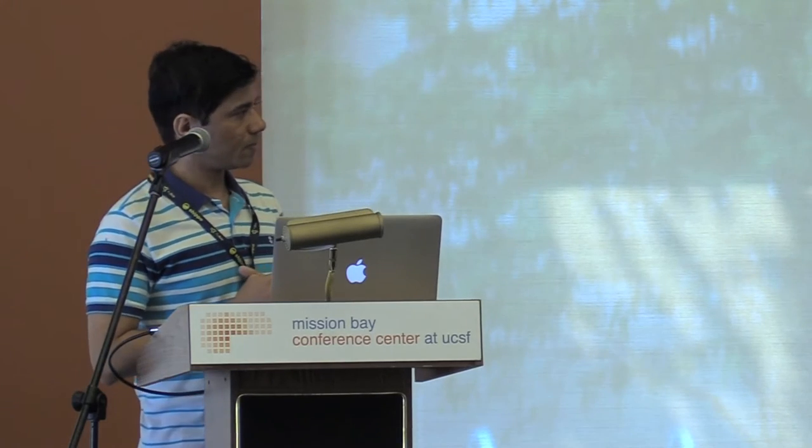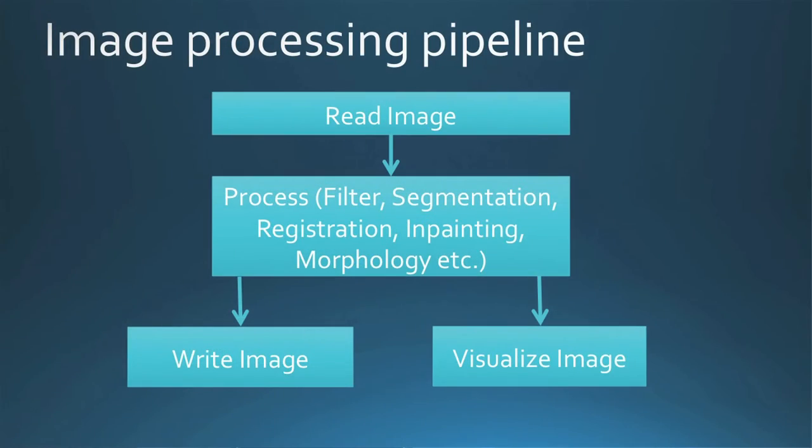Whatever filter you apply to one type of image, you could theoretically apply to other images as well. But sometimes filters don't apply exactly as imagined — for example, unsharp masking applied to photography might have a completely different effect on a medical image. So it's always important to understand what kind of images you're working with and apply the appropriate filter.